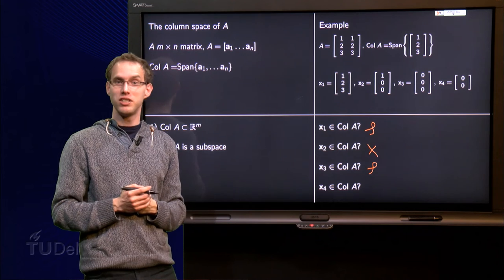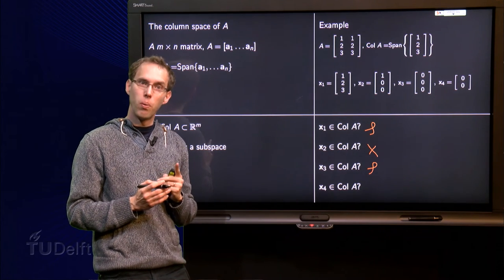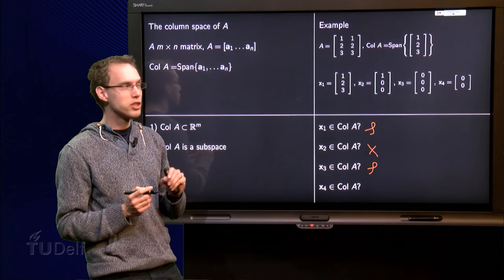It is also a 0 vector, so it is in the column space of A, right? Well, be careful. This one is a nasty one.